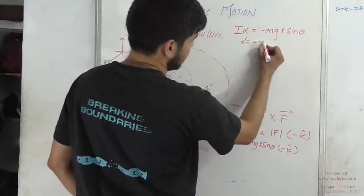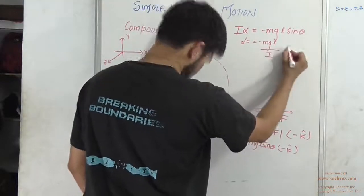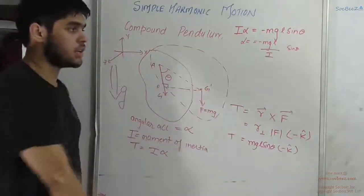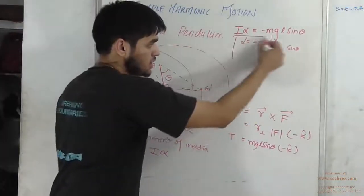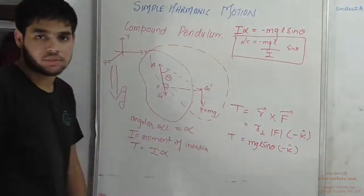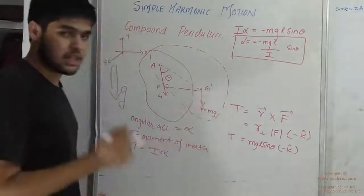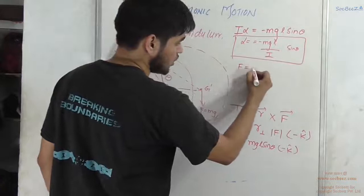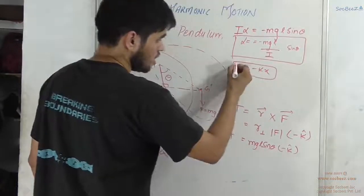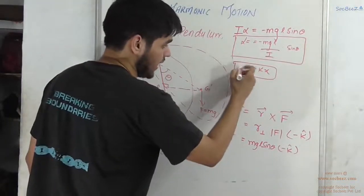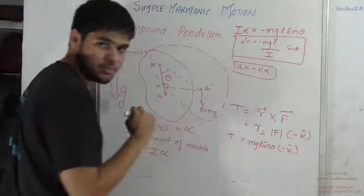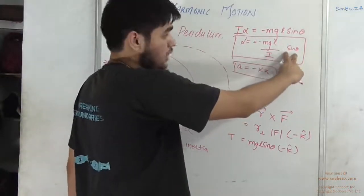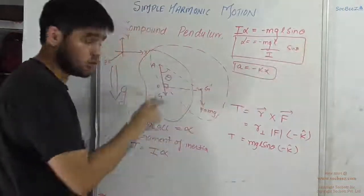Solving further: alpha = -(mgL / I) × sin theta. Now, is this simple harmonic motion? The answer is no. For SHM, acceleration must be a linear function of displacement — here it should be theta, but instead it is sin theta. So it is not simple harmonic motion.